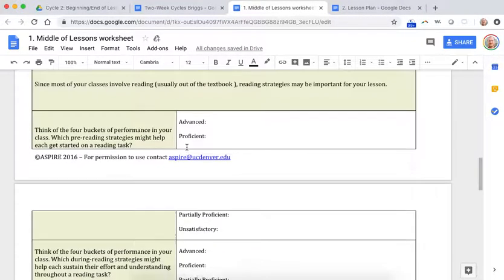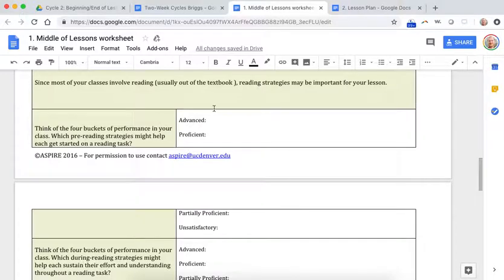And then, like I said, the reading strategies, I was kind of having you think about your groups: advanced, proficient, partially proficient, unsatisfactory. And then based on those reading strategies, what might be good ones that fit in there. Again, you don't have to use the reading strategies, but they could really help for this.